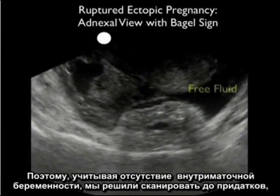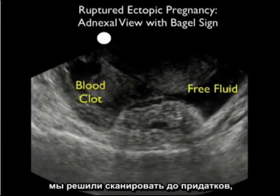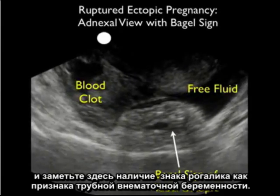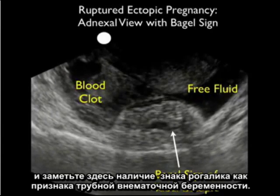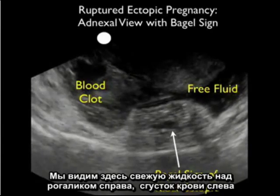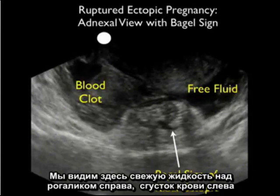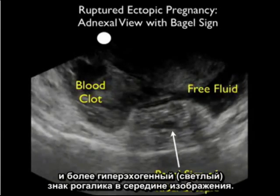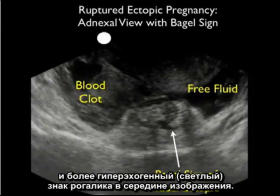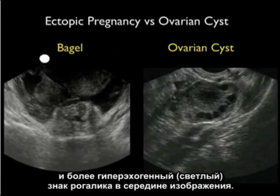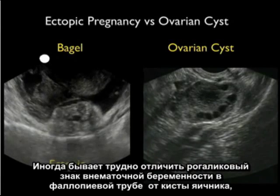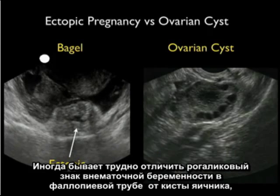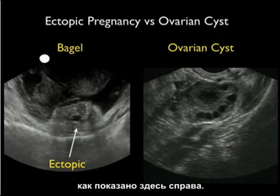Given the absence of an intrauterine pregnancy, we scanned out to the adnexa and notice here the presence of a bagel sign of a tubal ectopic pregnancy. We see fresh fluid above the bagel to the right, blood clot to the left, and the more hyperechoic or lighter bagel sign in the middle of the image. Occasionally it can be difficult to discern the bagel sign of a fallopian tube ectopic from an ovarian cyst, as shown here to the right.